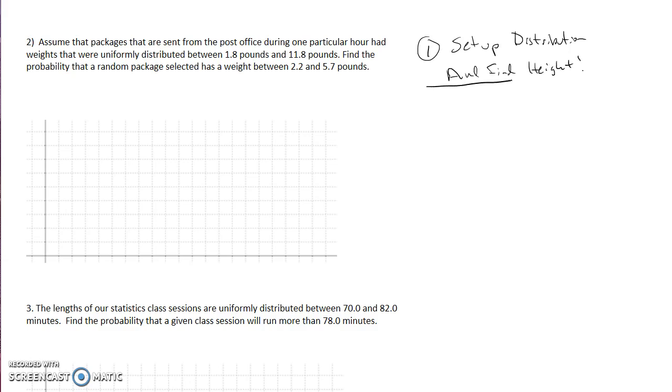That's going to be a good first step. So let's set up our distribution. We have this graph here. It says my distribution is between 1.8 and 11.8 pounds, right? So you can put this on a - we could count up by a certain amount, but for the sake of this problem I'm just going to put 1.8 on the left, 11.8 on the right.